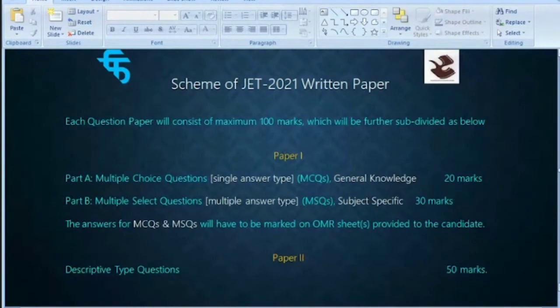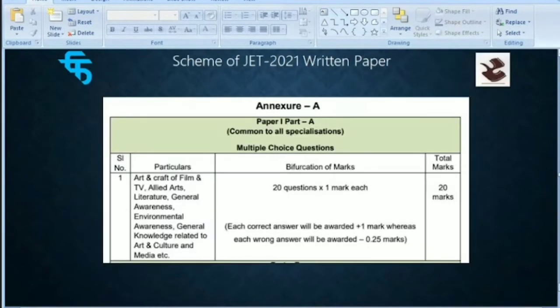Then there is Paper 2, which will have descriptive type questions according to your subject of specialization. That is worth 50 marks. So in total, this makes a written test for 100 marks.